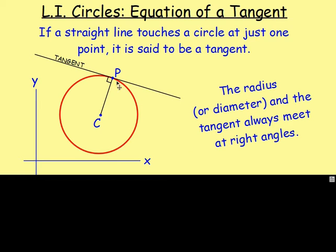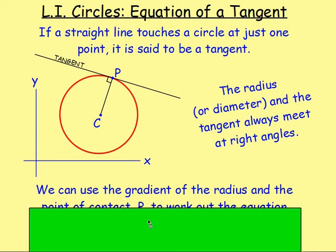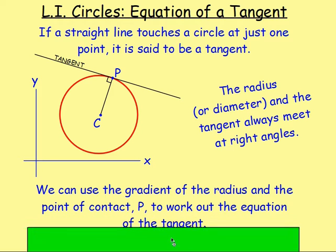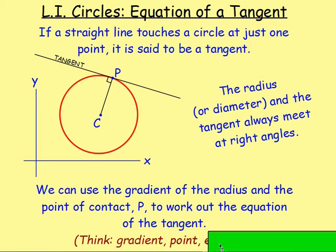What we're going to do in this lesson is work out the equation of the tangent. A tangent is a straight line, so we're really wanting the equation of a straight line. We can use the gradient of the radius — if you know the centre and you know the point, you can work out the gradient using y2 minus y1 over x2 minus x1. You can then use that point P, which is a point on the tangent, to work out the equation. Think back to chapter one: gradient, point, equation.